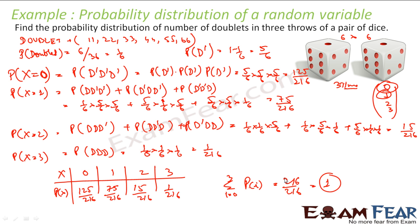This is the probability distribution of a random variable. We will use these things to find mean and standard deviation in future slides. A random variable is a variable whose value is dependent on a random experiment, and we can find the probability distribution of a random variable.